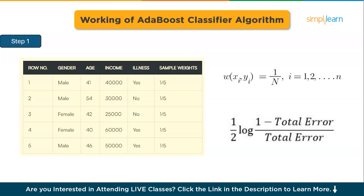In step two, we first assess how well gender classifies the samples, followed by evaluation of how age and income perform in classifying the samples. For each feature, we create a decision stump and calculate its Gini index. The tree with the lowest Gini index will be selected as our first stump. Let's assume that in our dataset, gender has the lowest Gini index, making it our first stump.